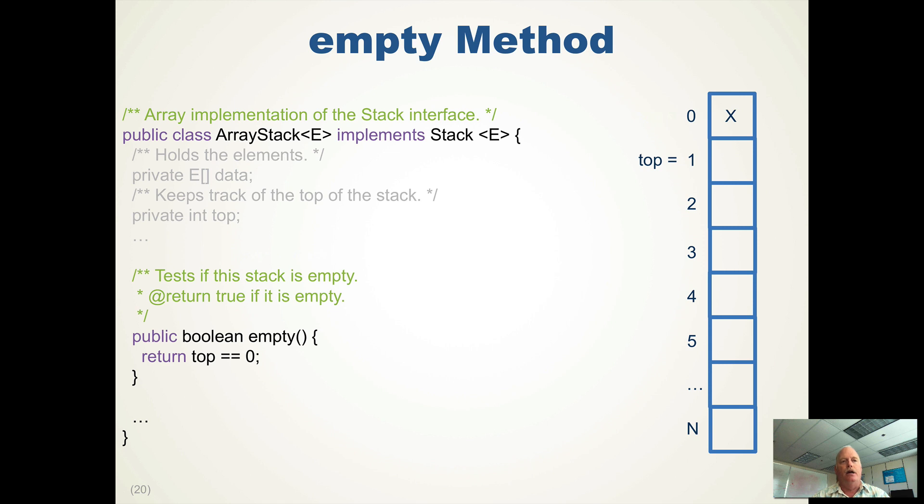So what does Boolean empty look like? You just check to see if top is zero. In this case, top is one, so we have something on the stack. If we were using the top pointing to the top item, we would check for minus one. So now top is back to zero, the stack is empty.